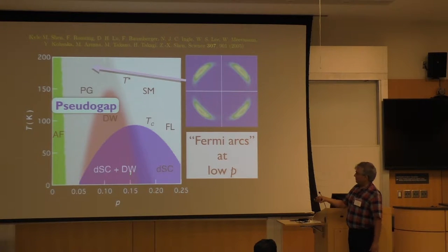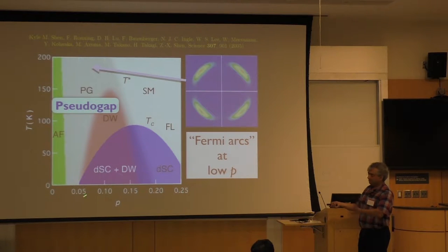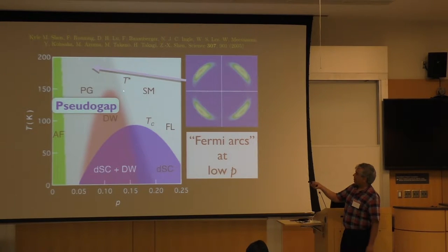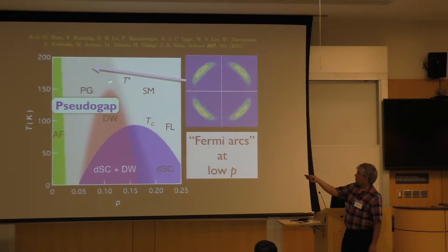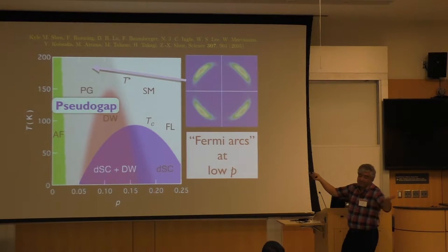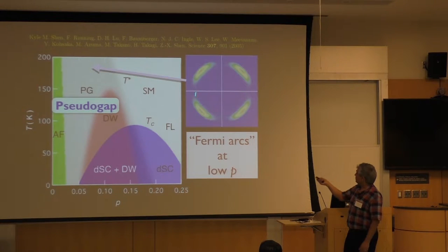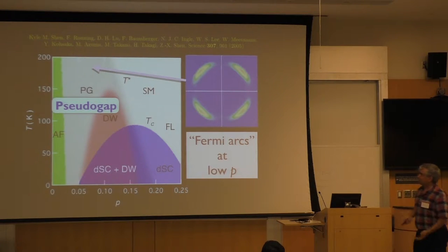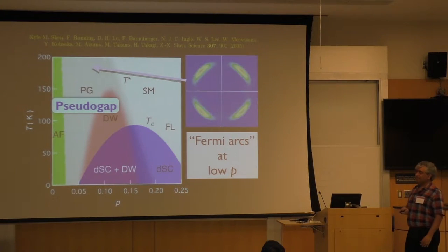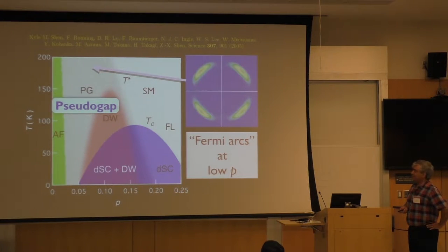What's become clear now in the last three years is that all of the density wave order is ubiquitous in all of the cuprates. Once you get above about 150 Kelvin, there's really no sign of it. But in this region — which I call PG or the high-temperature PG — you have some sort of metal which is still not a conventional metal where there's no obvious broken symmetry.